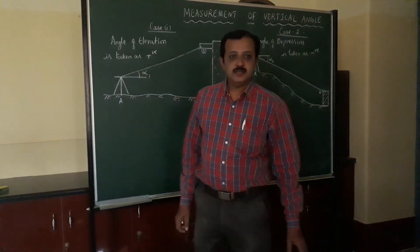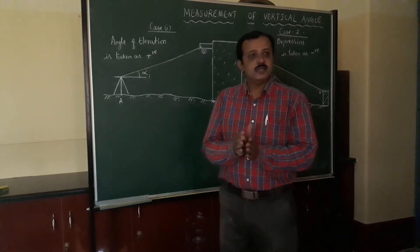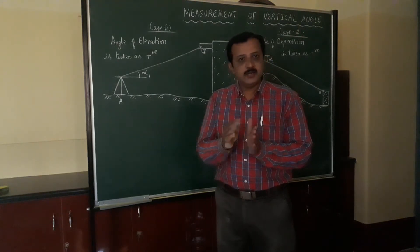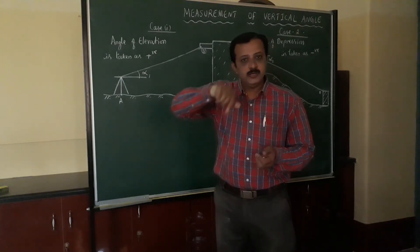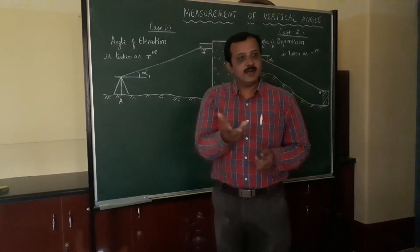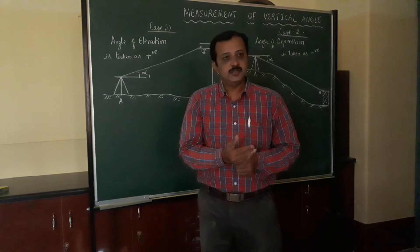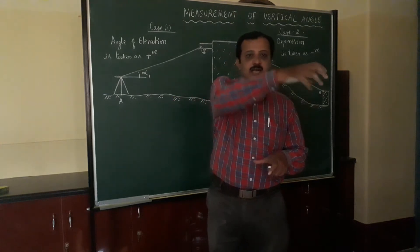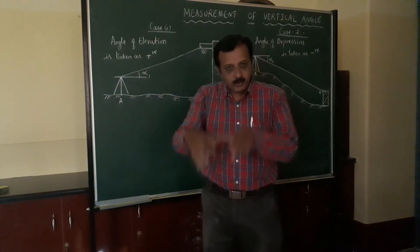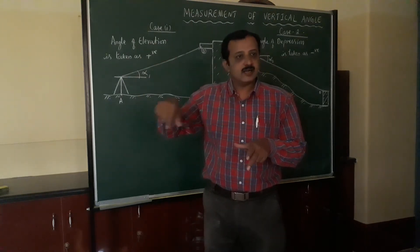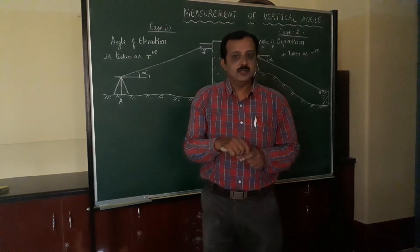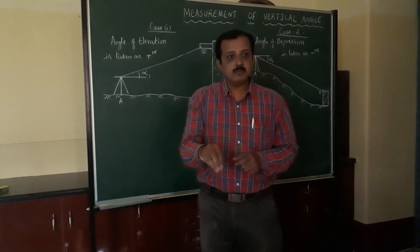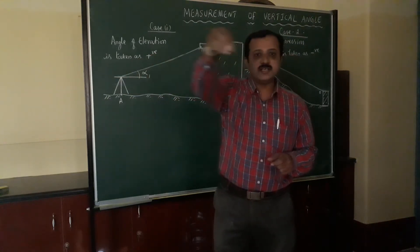In the previous class, we discussed finding out horizontal angles using the transit theodolite. We also discussed finding horizontal angles by the repetition method, where the same angle is measured repeatedly two or three times and the average is taken. We also discussed the reiteration method, where from a single point, angles to multiple stations are measured.